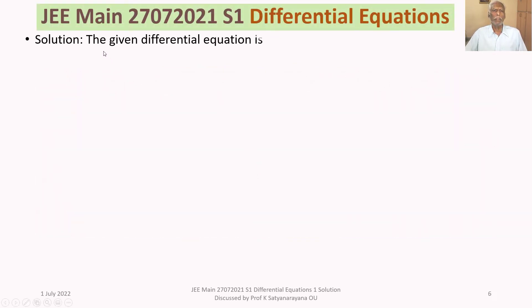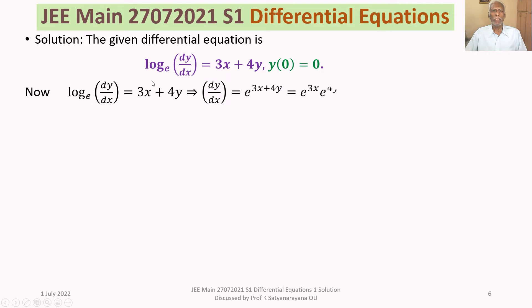We now discuss the solution in detail. The given differential equation, with the initial condition y(0) = 0, can be rewritten as dy/dx = e^(3x + 4y) by raising both sides as powers of e. This equals e^(3x) · e^(4y) by separating the exponentials.